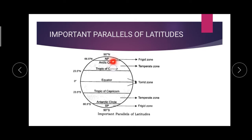The place between the Arctic Circle and the North Pole is called the frigid zone. And the place between the South Pole and the Antarctic Circle is also called the frigid zone.